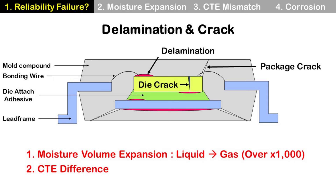Second, delamination and crack are caused by CTE difference between materials. CTE stands for coefficient of thermal expansion. The CTE of the die is low, but CTE of the mold compound is high. When the package is exposed to high temperature, the volume of the die and mold compound increases differently — mold compound expands more than die. The same thing happens at low temperature: mold compound shrinks more than die. This difference makes delamination and crack.